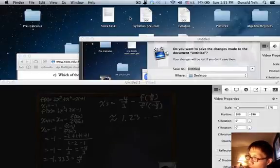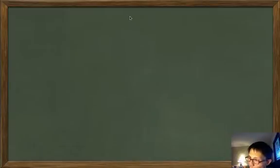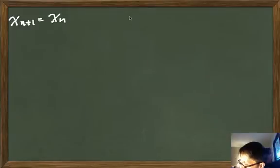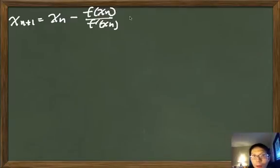I would like to cover Newton's method and the cases where it fails. The Newton's method equation looks like this: x_{n+1} = x_n minus f(x_n) over f'(x_n). This is the case where it will fail.